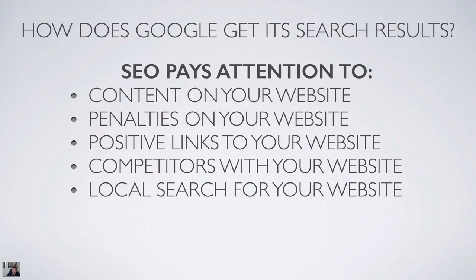A lot of people pay attention to, and should pay attention to in the context of Panda, content on your website, penalties on your website, positive links to your website, and negative links — although that goes into the Penguin algorithm, not Panda — competitors, and local search if that's applicable in your industry. In some industries it's not so applicable, like real estate: very little seven-pack local results for real estate terms, and searches for real estate agents are often relegated to the big syndicate sites.